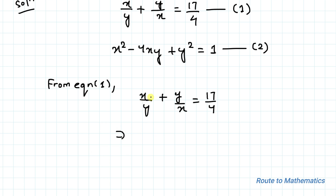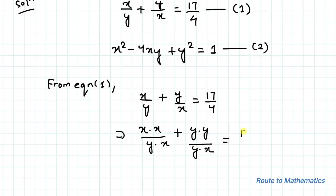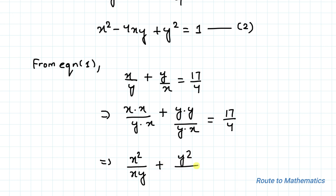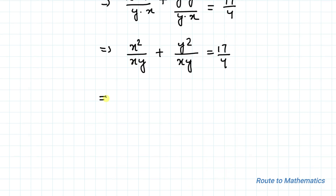In the next step, let's multiply x in both numerator and denominator of the first term, and multiply y in both numerator and denominator of the second term. So we have x²/xy + y²/xy = 17/4. Taking LCM, we get x² + y² = (17/4)xy.